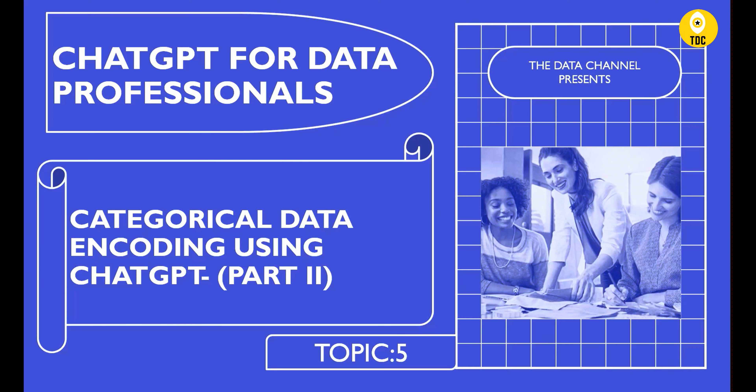Welcome to the Data Channel. You're watching the ChatGPT for Data Professionals course. This next video covers categorical data encoding using ChatGPT, Part 2. In Part 1 — the video just before this one in the playlist — we explained theoretically what categorical data encoding means. In this video, we'll use ChatGPT and see practical examples of how data can be converted into categorical encoded values, which will further help in data analysis, data analytics, or machine learning.